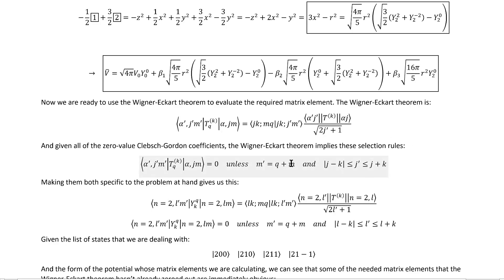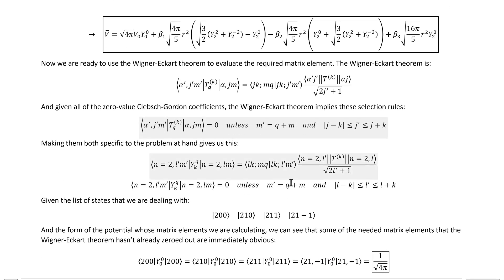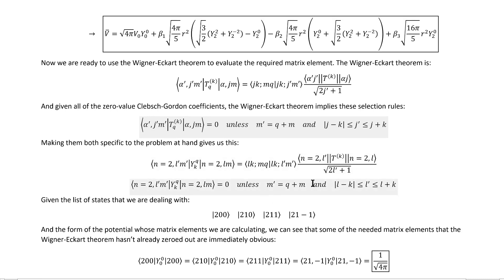Now, if we make both of these things specific to the problem at hand, we arrive at this. Given these selection rules, the task now is to consider the cases that do satisfy them, the cases that aren't automatically zero given zero value Clebsch-Gordon coefficients. To do that, we need to remember the list of states that we're dealing with and the various spherical tensors that actually do show up in this potential expression.